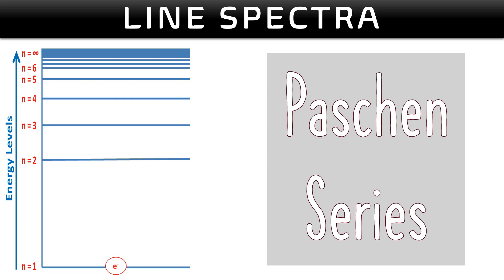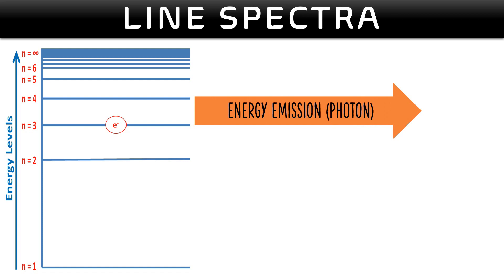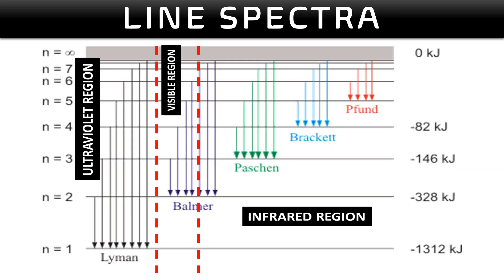Now let's look at Paschen series before we move on. The electron at the ground state absorbs energy, goes up to n=4, and this time falls to n=3 — energy is emitted as a photon giving the first line of Paschen series. On your screen you can see the representation of the whole electron transition for Lyman, Balmer, Paschen, Brackett, and Fund series.